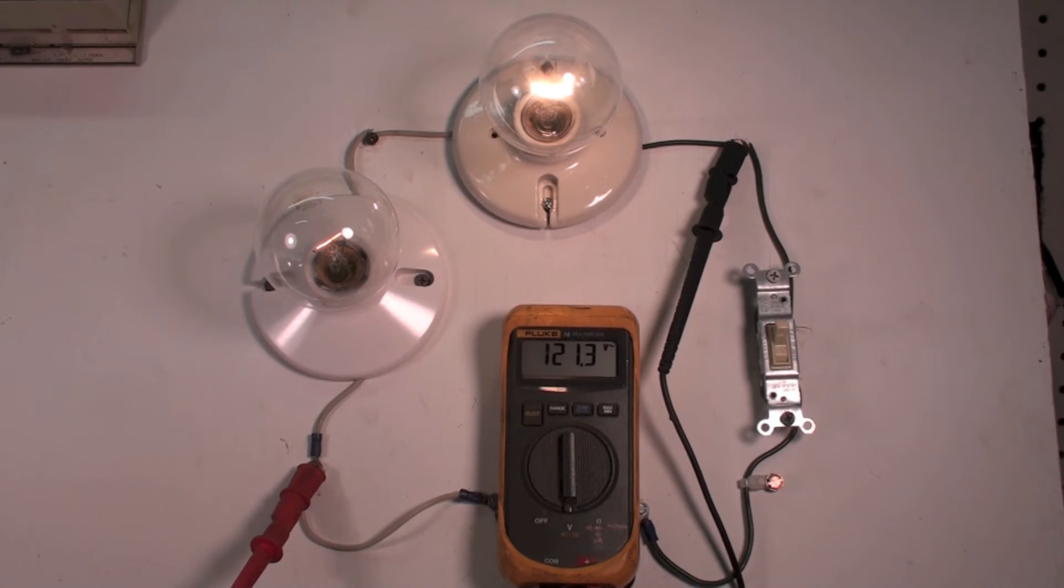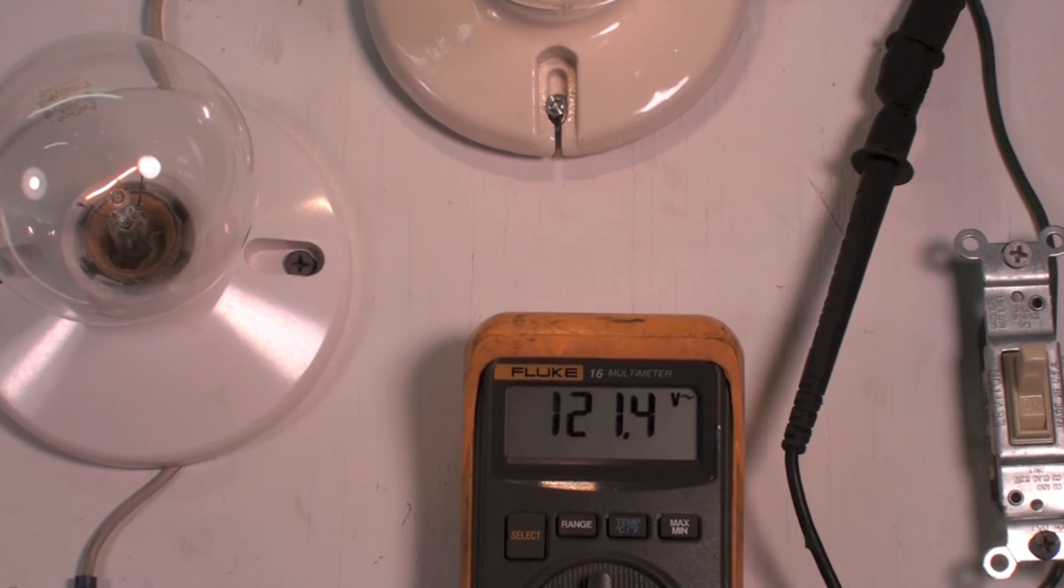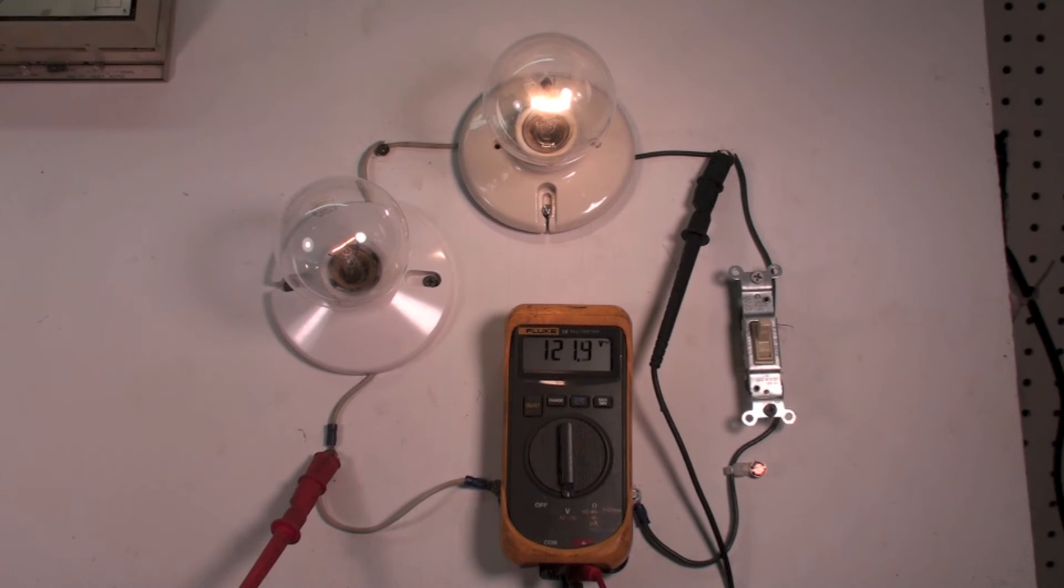So I'm either side of line, I am actually in parallel with these two loads, and I'm reading 121.3 or 121.4 volts. That's normal because I have 121 volts drop across this circuit.